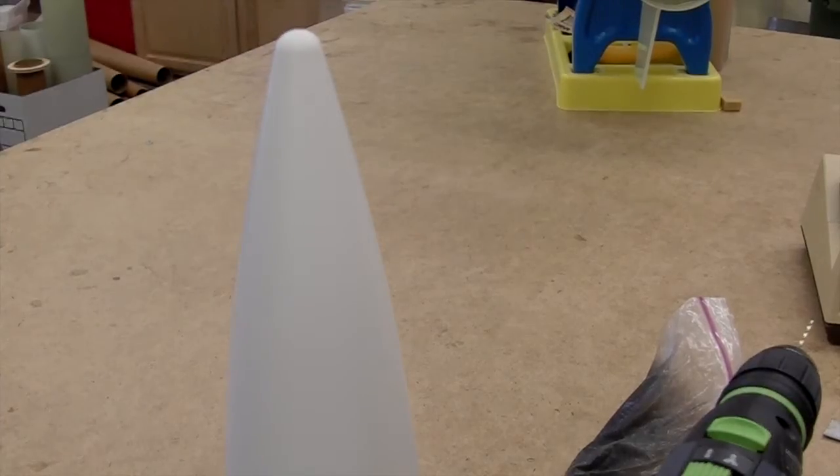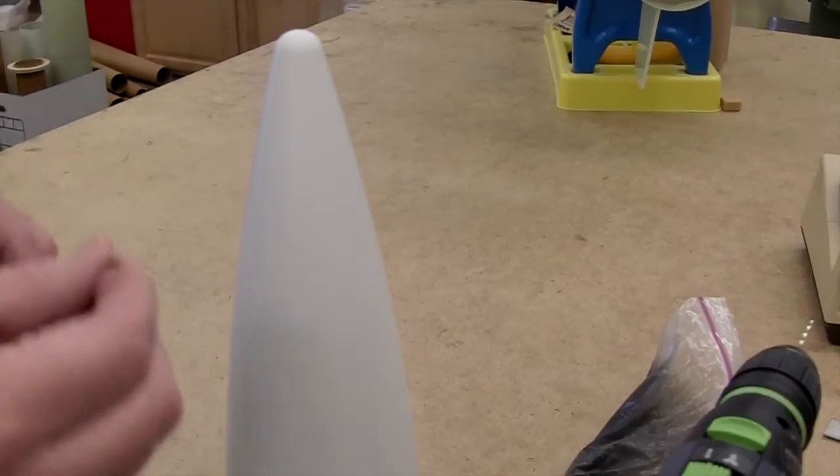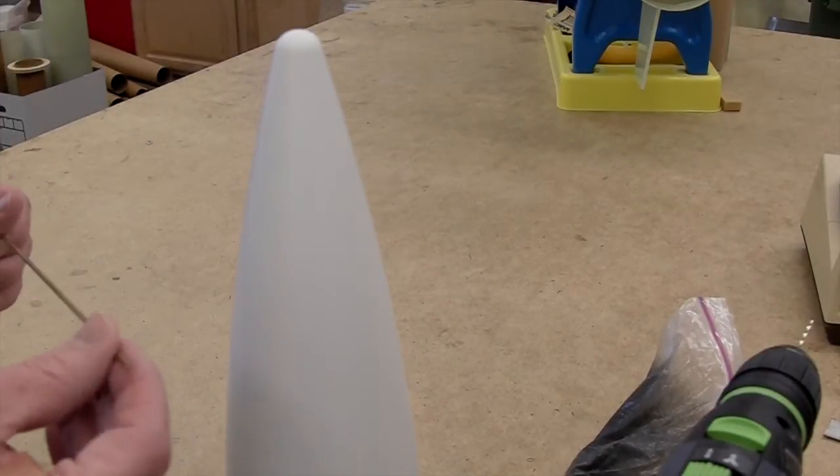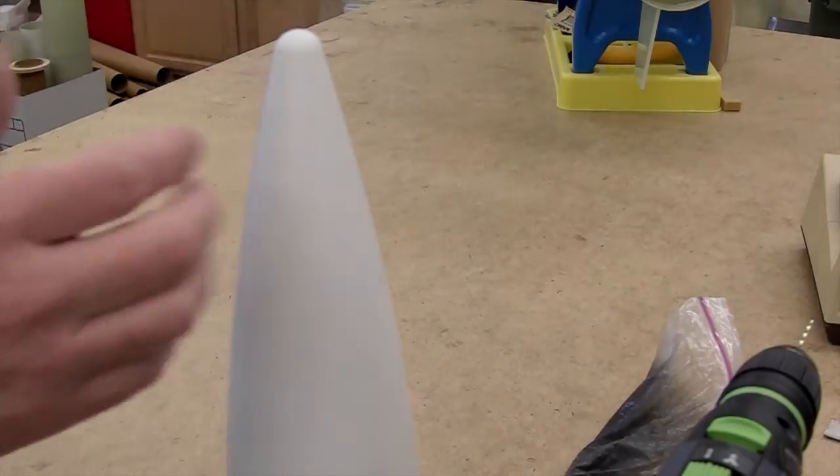Okay, so we've sanded the inside, roughed it up, wiped it out. But we want some additional security for that slug. I've got this solid rod of brass, aluminum would work fine too, any material that's sandable so that you can finish the outside.